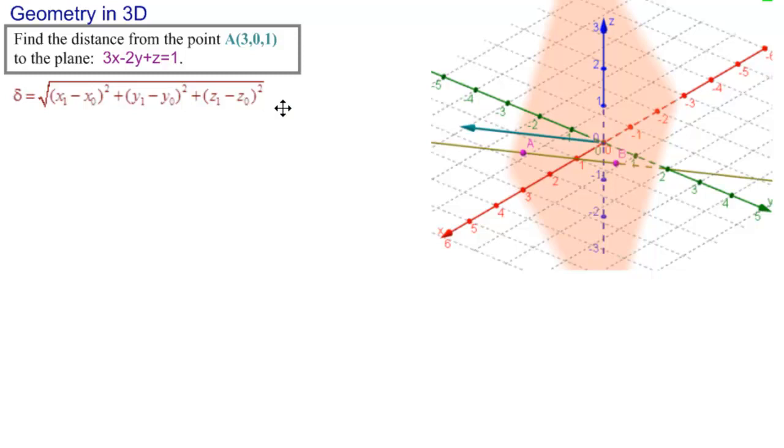So, we said, how do we find the point B? First we need to find this normal vector, and how can we find that?